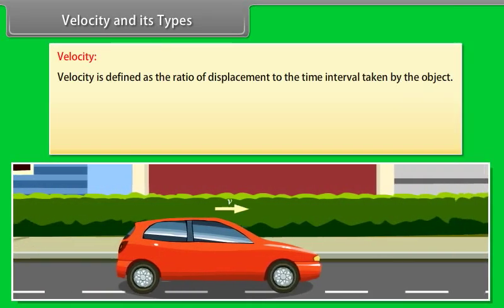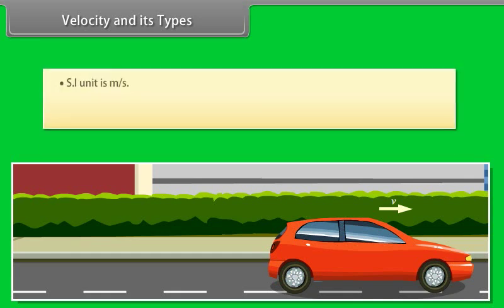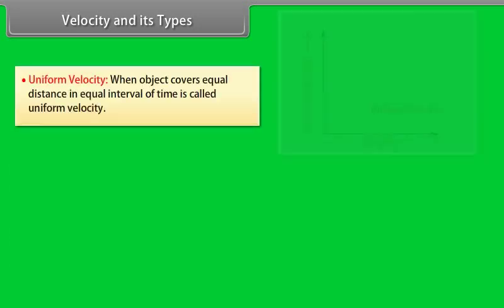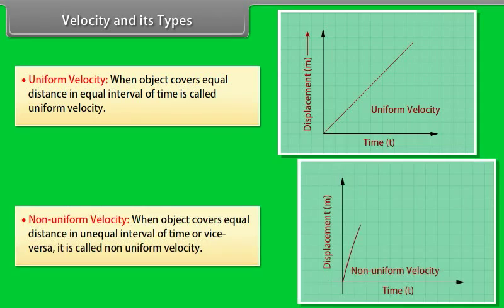Velocity: Velocity is defined as the ratio of displacement to the time interval taken by the object. Uniform velocity is when an object covers equal displacements in equal intervals of time. Non-uniform velocity is when an object covers equal distances in unequal intervals of time, or vice versa.